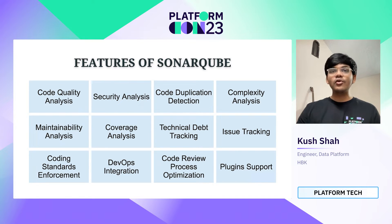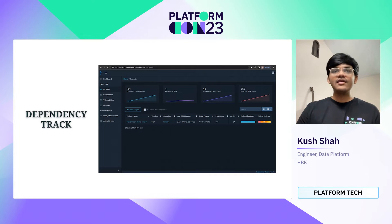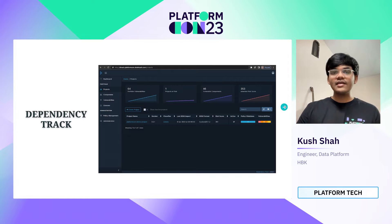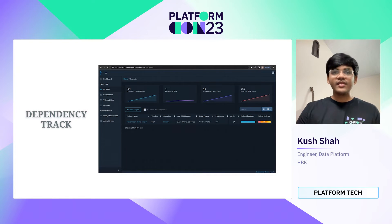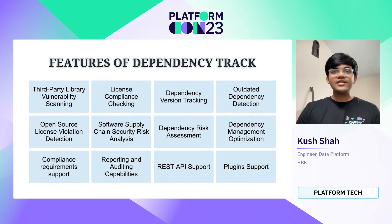Another such tool is Dependency Track. It helps you manage your software dependencies by identifying and tracking vulnerabilities and licensing issues in third-party libraries. It provides features like third-party library vulnerability scanning, license compliance checking, software supply chain security risk analysis, and many more, with REST API and plugin support.